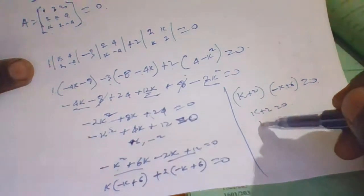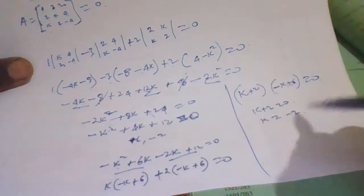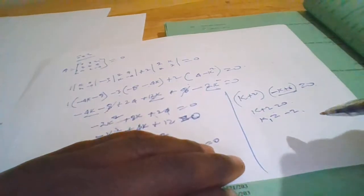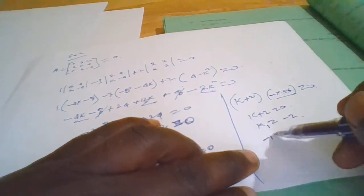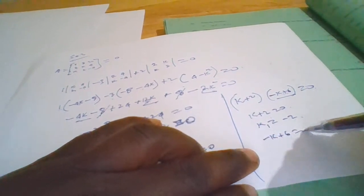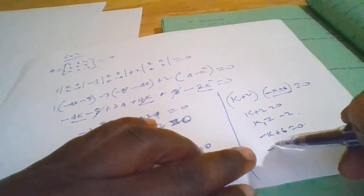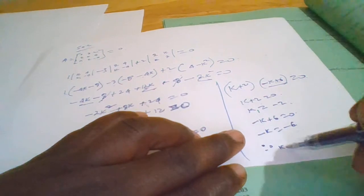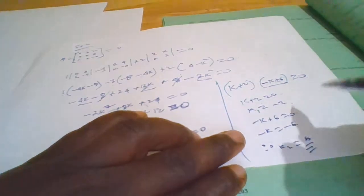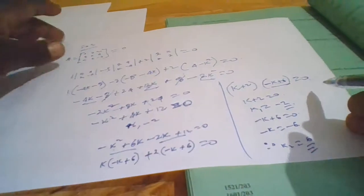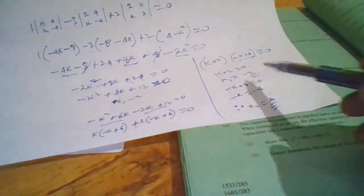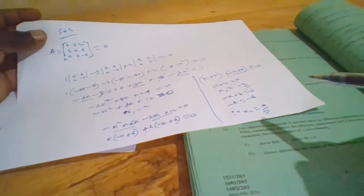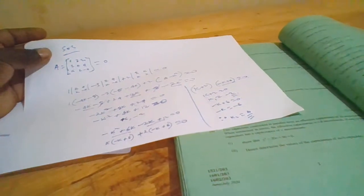From the factors: k plus 2 equals 0 gives k₁ equals negative 2. And negative k plus 6 equals 0 gives k equals 6. Therefore the two values of k are negative 2 and positive 6. Thank you for watching and listening.